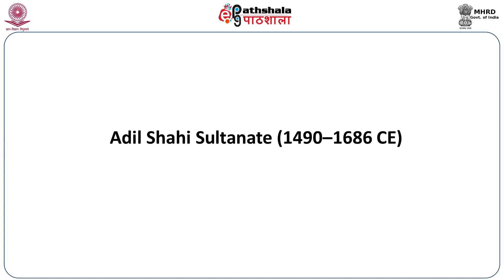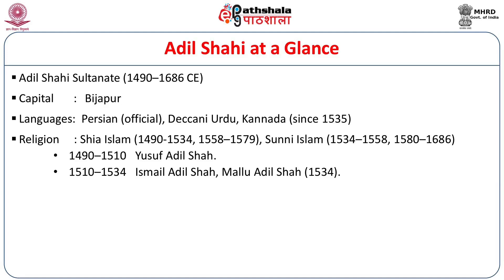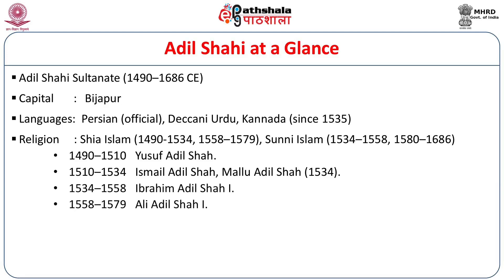The Adil Shahi Sultanate started in 1490 and ended in 1686 CE with subjugation by the Mughal Empire. The main religion was Shia Islam, with periods of Sunni Islam. The dynasty was founded by Yusuf Adil Shah, succeeded by Ismail Adil Shah, Malu Adil Shah, Ibrahim Adil Shah I, and Ali Adil Shah, during whose reign great cultural progress was made. He was followed by Ibrahim Adil Shah II, considered the Akbar of Deccan due to his religious tolerance.